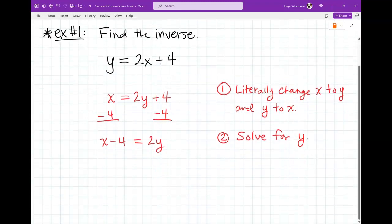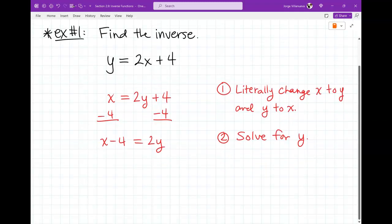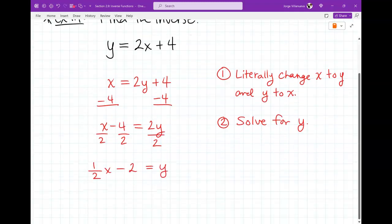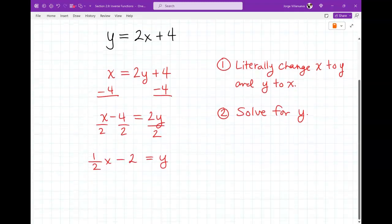So now it says x minus 4 equals 2y. Now, I have to keep solving for y, so I have a 2 times y, I have to divide by 2, divide everything by 2. So I get 1/2 x minus 2 equals to y. There's me solving for y.